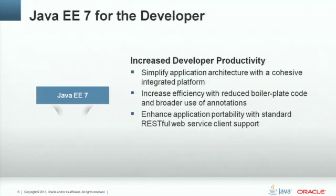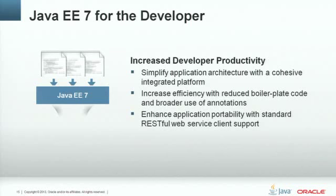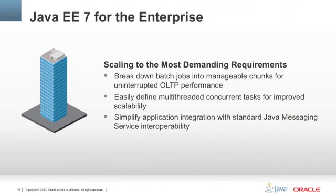The second theme of Java EE 7 is developer productivity. Java EE 7 is a much more productive environment because it's a cohesive, integrated platform. It allows a developer to take skills from one area of Java EE 7 and apply those same skills across many areas and technologies. One of the ways we do this is to eliminate significant amounts of boilerplate code through annotation-based development. The third theme in Java EE 7 is support for enterprise-scale applications, including a new batch programming API, concurrency utilities based on Java SE concurrency, and a major revision to the Java messaging specification — JMS 2.0.